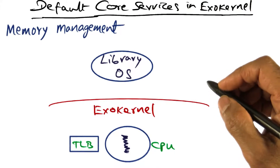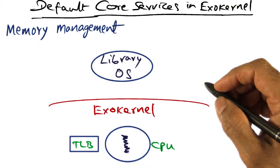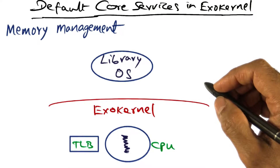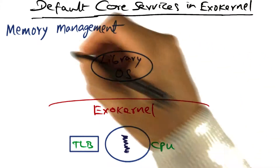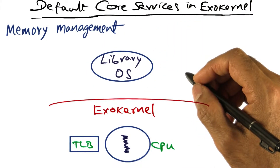When we discussed spin, I mentioned that memory management and CPU management are core services that any operating system has to provide. We discussed how spin had its own way of dealing with those core services. We will do the same analysis for exokernel as to how it does memory management and CPU scheduling.